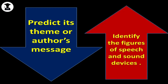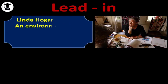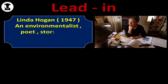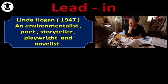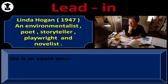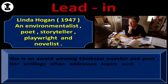Before starting our poem, it is very important to know some information about the poet herself. Linda Hogan was born in 1947. She is an environmentalist, poet, storyteller, playwright and novelist. Look at her photo. She is an award-winning Chickasaw novelist and poet. Her writings often address topics such as the environment and Native American history. She is an activist, speaker, and educator.